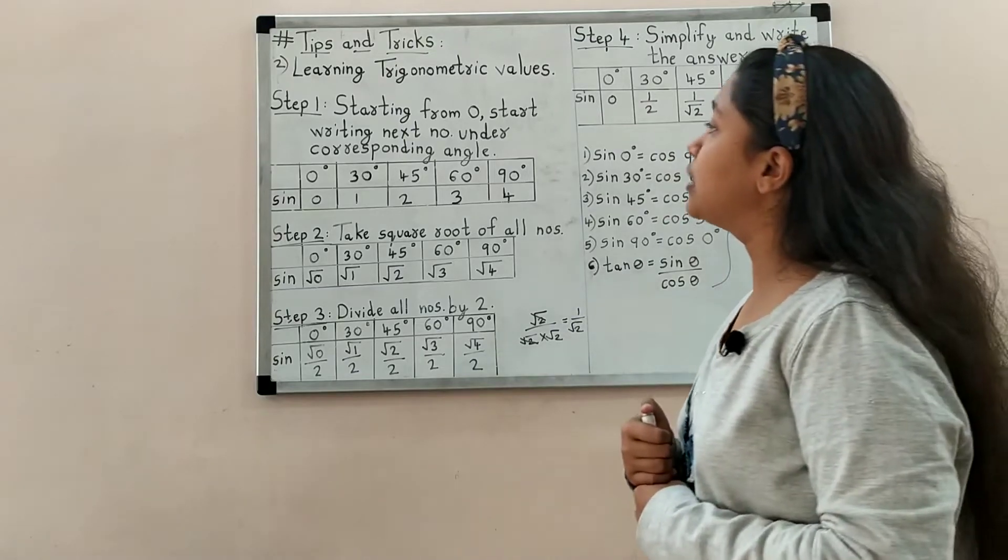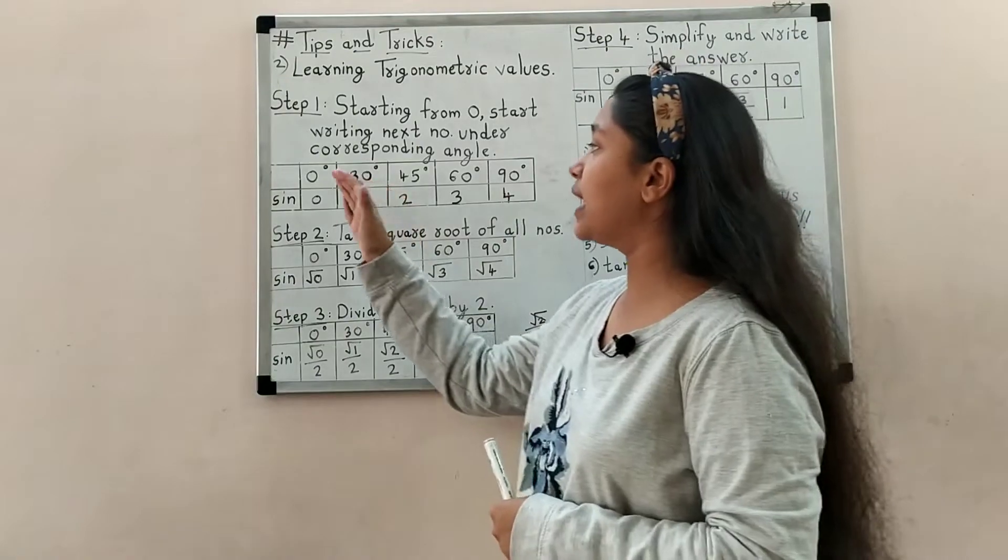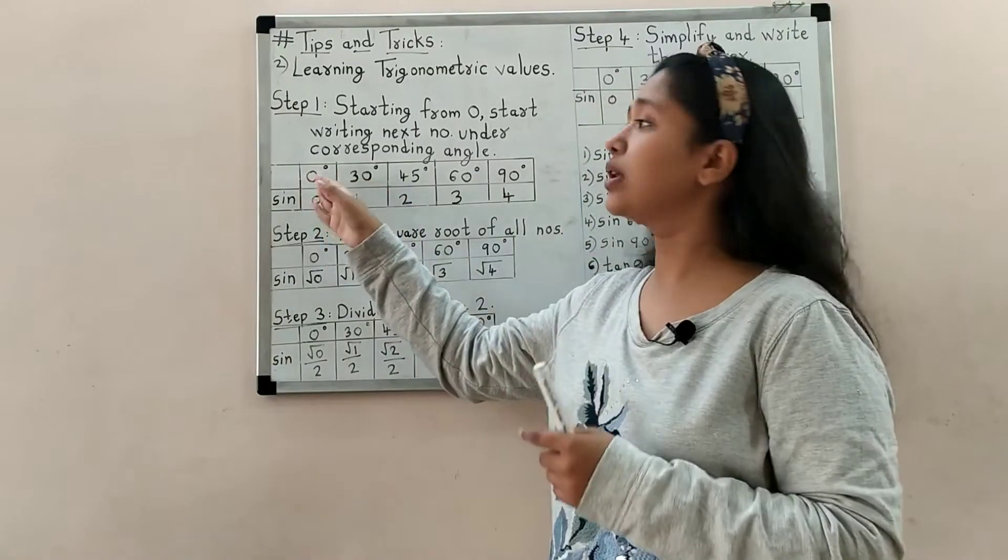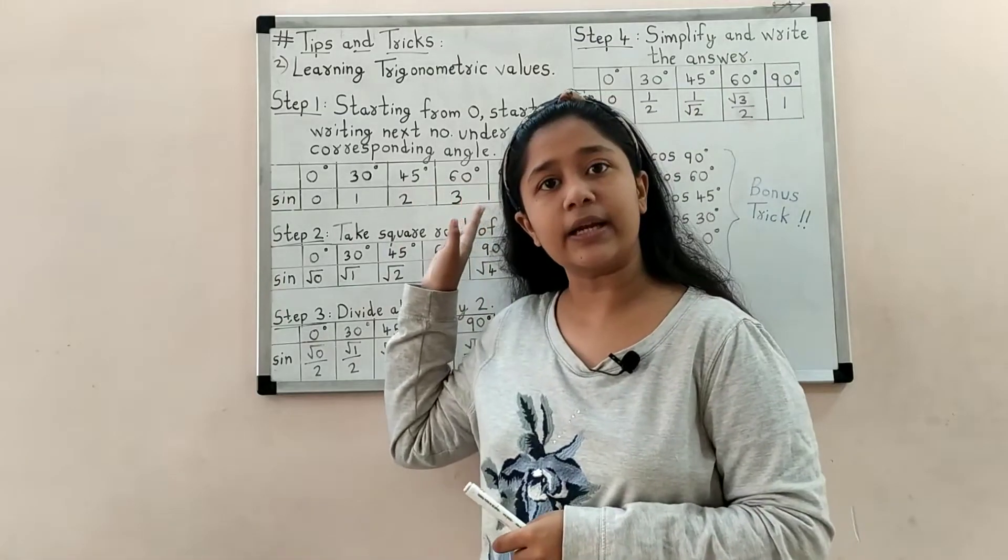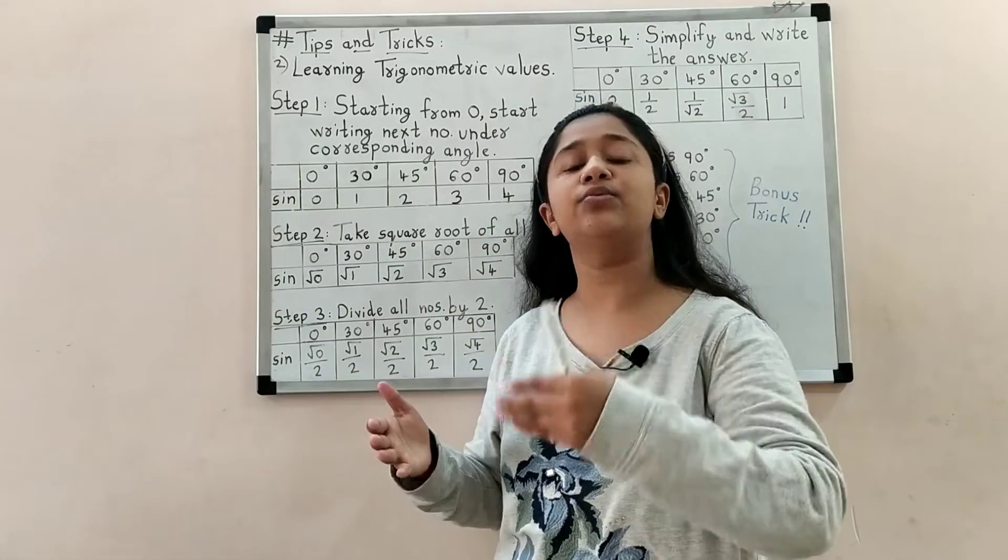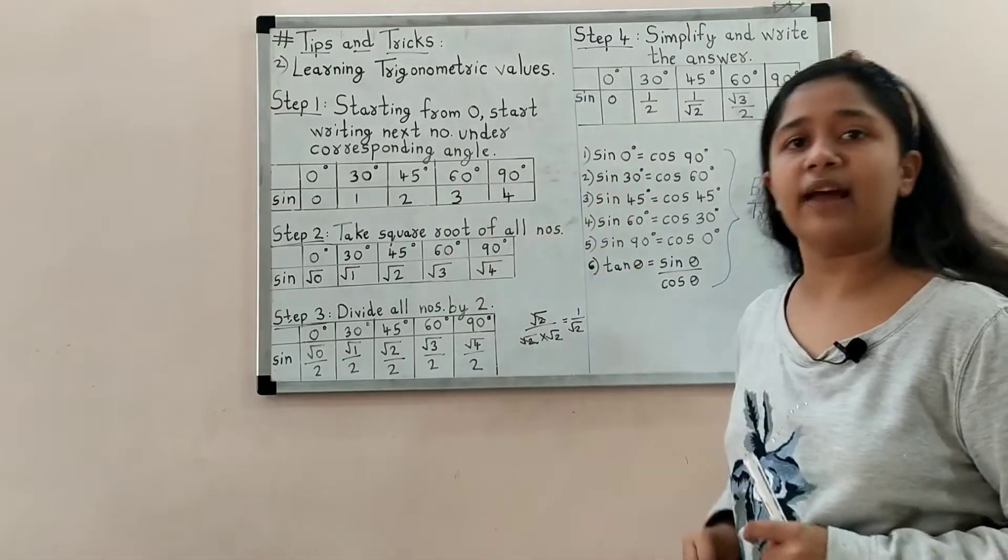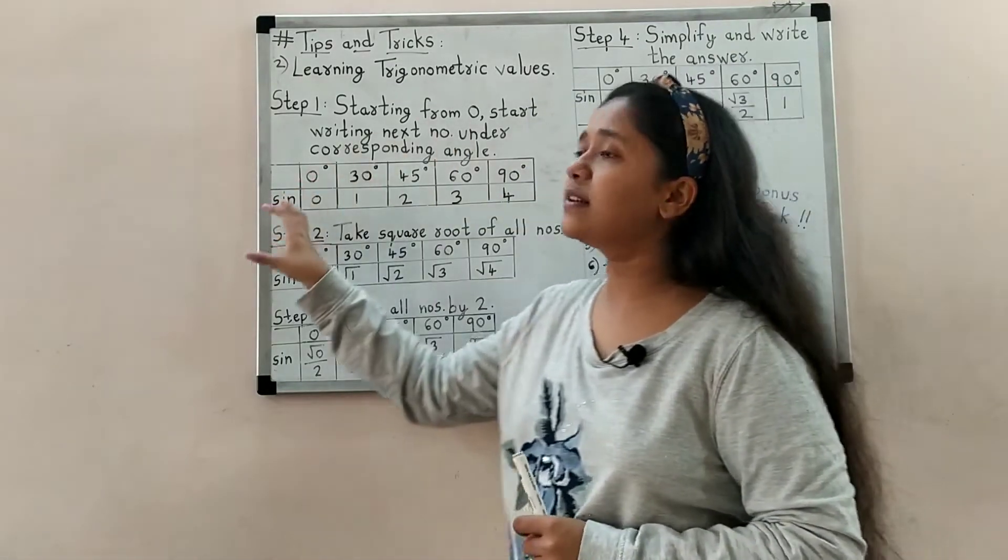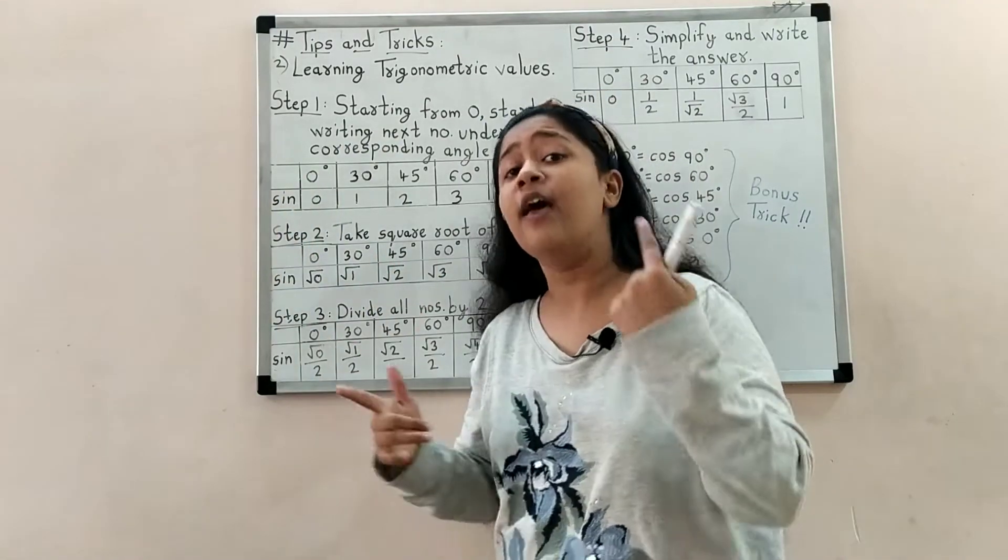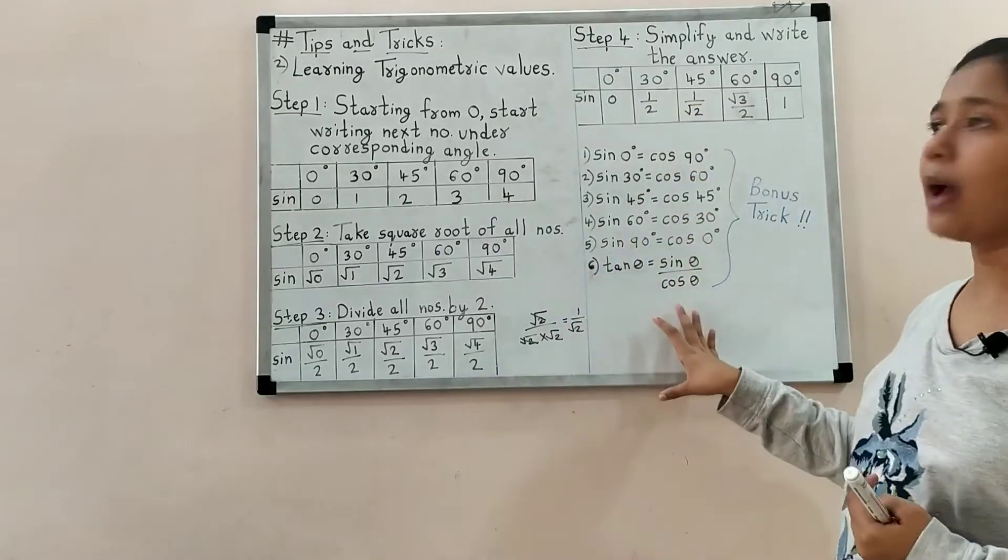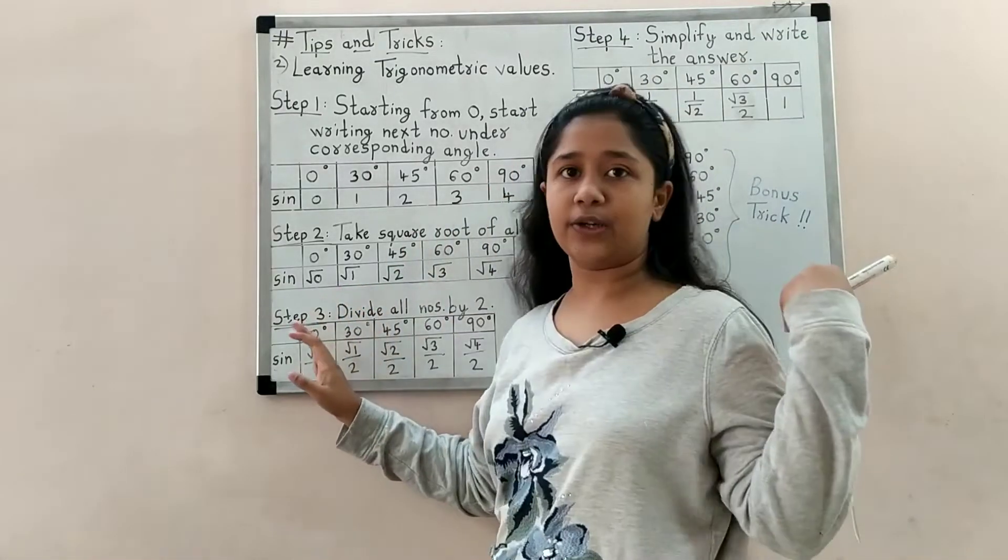Step 1 says: starting from 0, start writing next number under the corresponding angle. That means you write whole numbers. We have which angles? 0, 30, 45, 60, and 90. Until 10th standard, you need to learn up to 90 degrees. In higher standards, 180, 270, 360, but now you need to learn these 5 angles. I have shown you sin values first. If you understand the value of sin, then you will understand cos and tan.